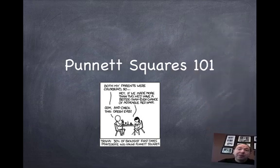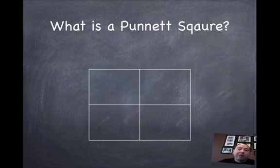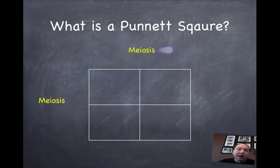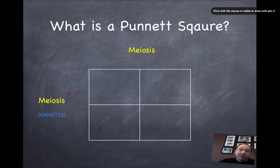So the next thing we're going to talk about is: what is a Punnett Square? Well, as you can see here, it's just basically a box with four different quadrants, and on the outside we're going to put the products of meiosis — or in other words, the gametes.